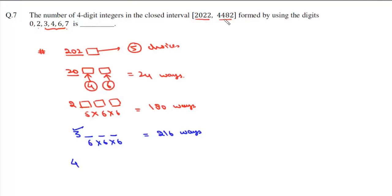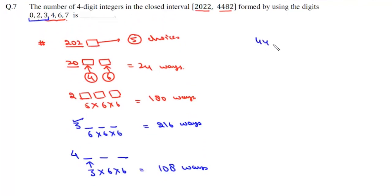First we talk about all the numbers in which the second digit is less than 4. So here we have three choices: it can be 0, 2, or 3. If we have 0, 2, or 3 here, then all the numbers will be less than 4482. So for the remaining two we have six choices each, so there will be 3 × 6 × 6, which is 108 ways.